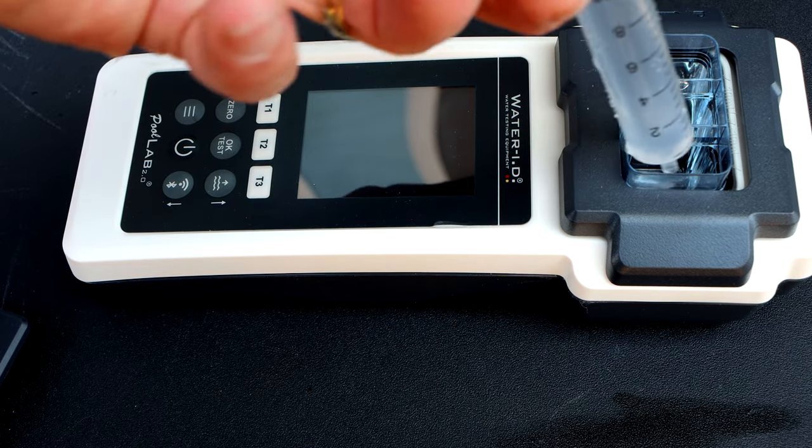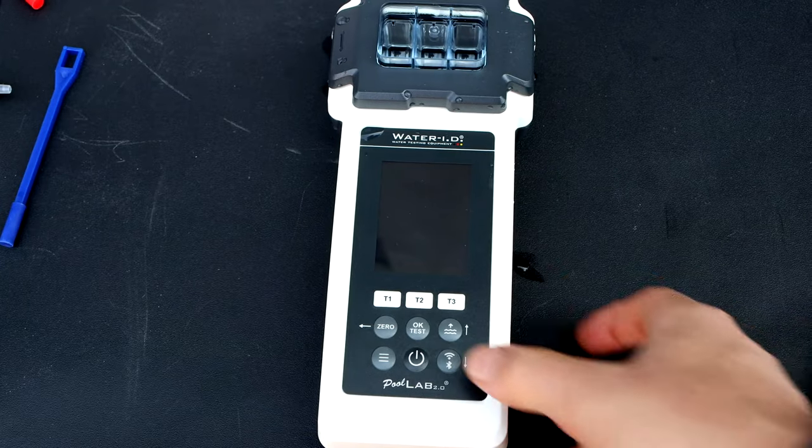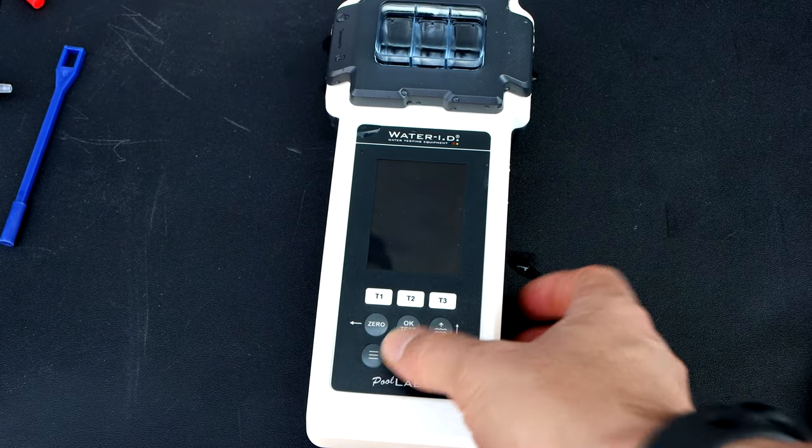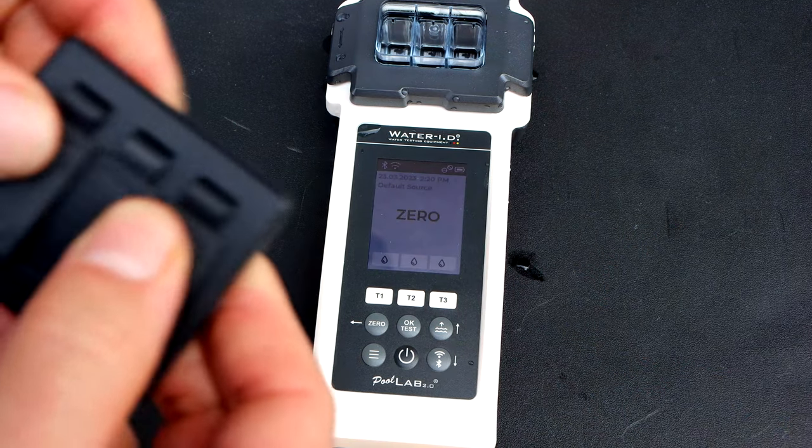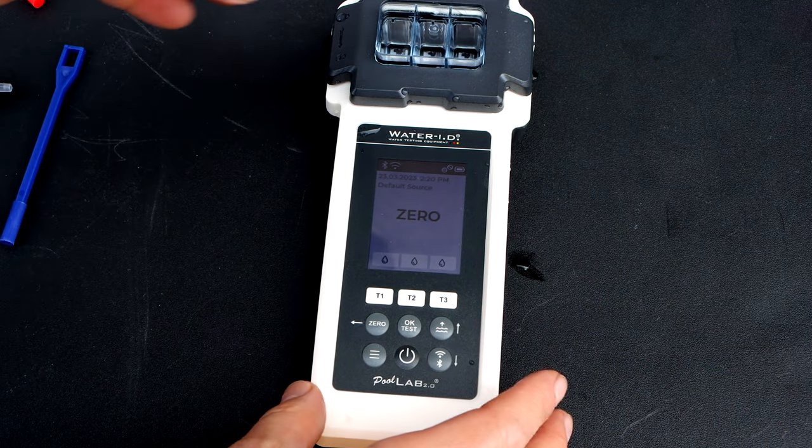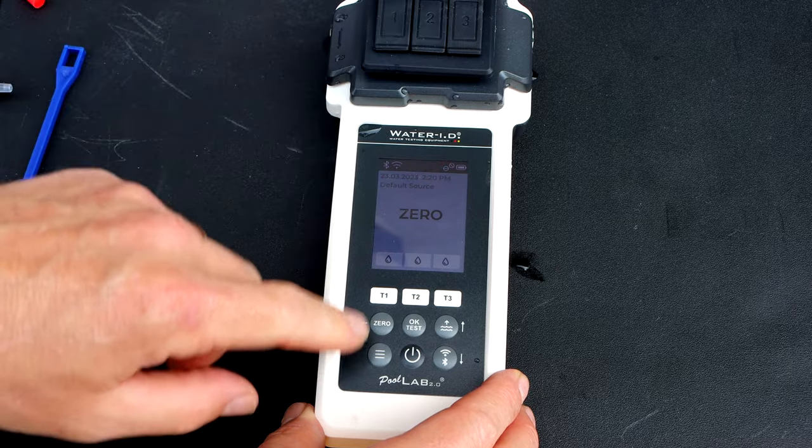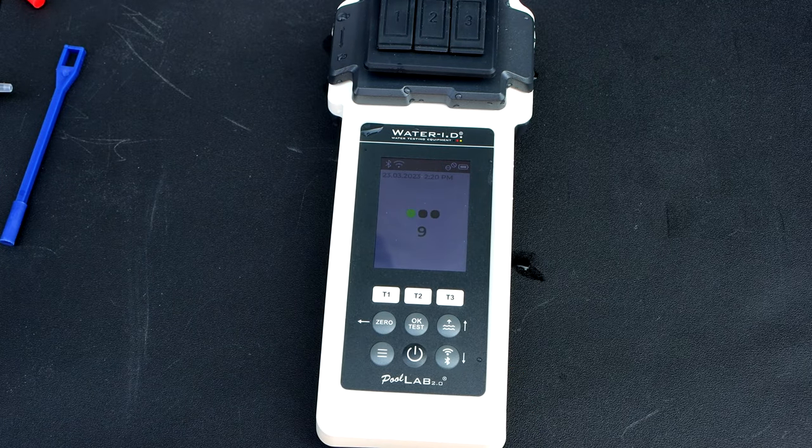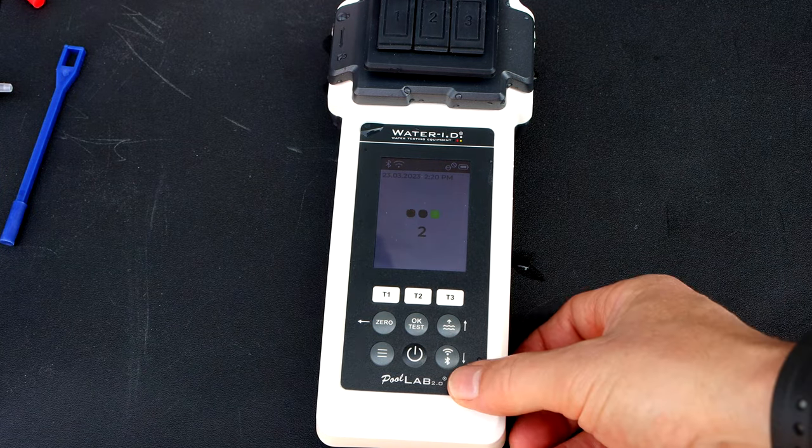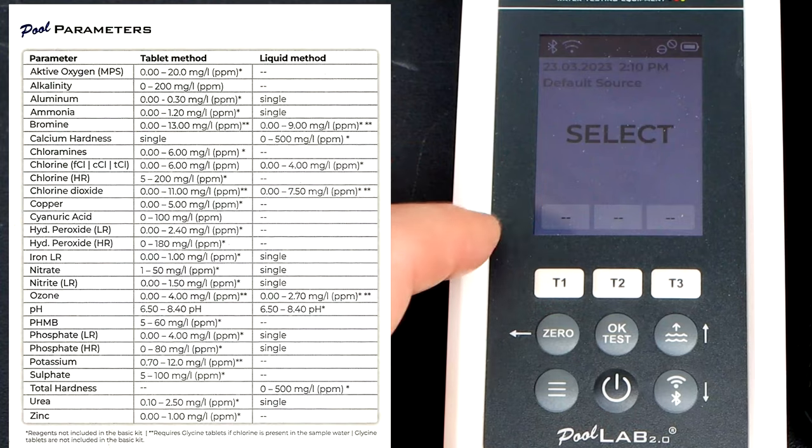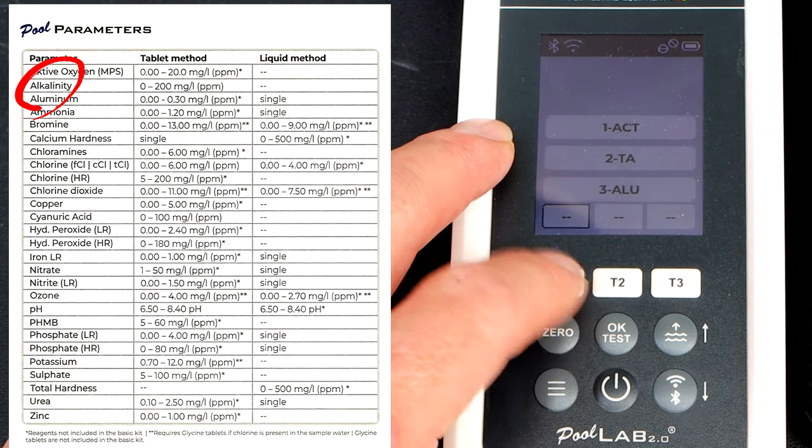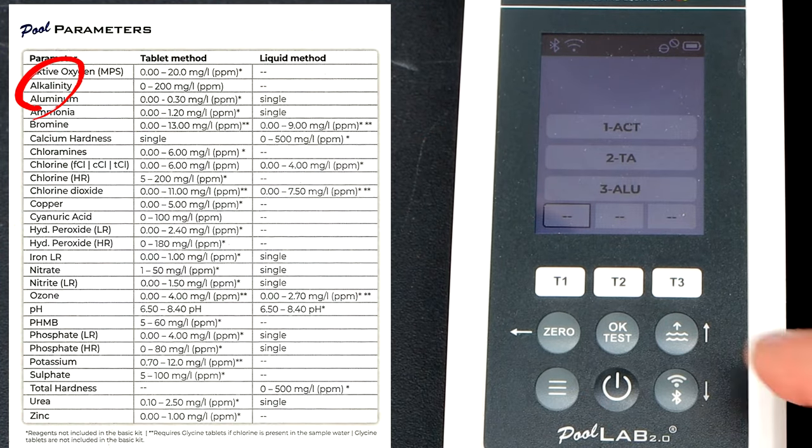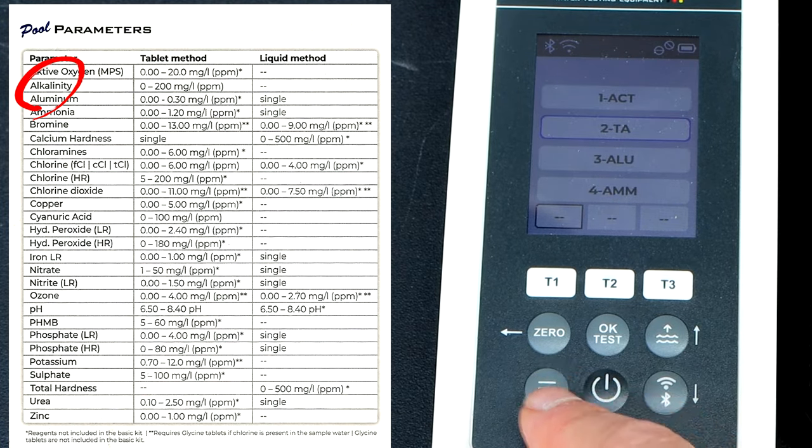You would just fill it up to the top and then fill up the chamber. I'm going to turn on the unit. Whenever you turn it on for the first time you want to zero it out. I'm going to do all three tests. Test one, I'm going to do the total alkalinity.